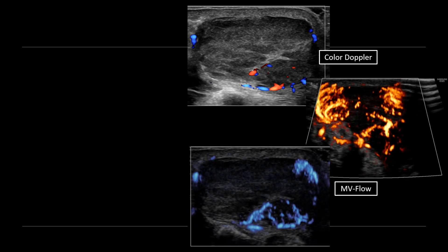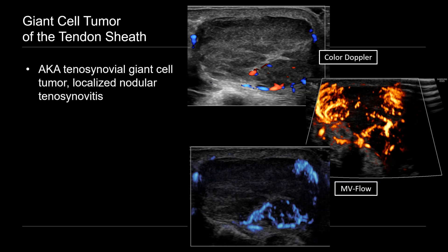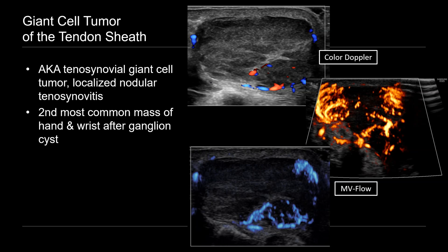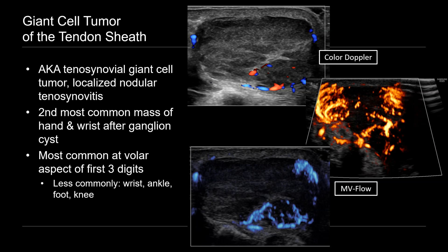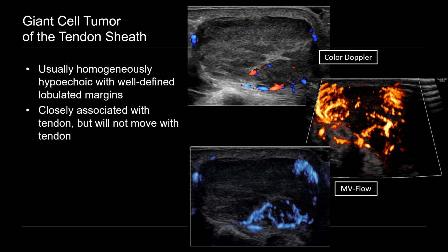We can further bring that out by adding MV flow, which is a form of microvascular flow imaging that detects slow flow in small caliber vessels, so it's a great way to bring out the vascular characteristics. So we have a solid vascular mass. At surgery, this proved to be a giant cell tumor of the tendon sheath. These are also known as tenosynovial giant cell tumors or even localized nodular tenosynovitis, and they represent the second most common mass of the hand and wrist after the ganglion cyst. They occur most commonly at the volar aspect of the first three digits — the thumb, index finger, and middle finger — but we can also see them at the hand, wrist, ankle, foot, and knee. They're usually homogeneously hypoechoic with well-defined lobulated margins, and they'll be closely associated with the tendon but will not move with tendon movement because they arise from the sheath, not the tendon itself.